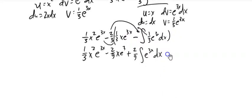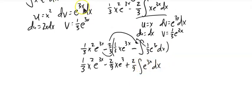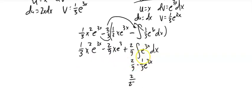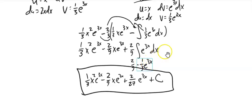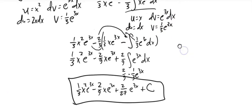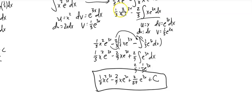One more piece: take that last integral, which we've done several times in this problem. The integral of e^(3x) is 1/3 e^(3x), still multiplied by that 2/9, giving 2/27 e^(3x). Then we collect all the other pieces and add the constant. What I want you to notice is that we had to work to peel away the x²: we took its derivative to get 2x, then had to do integration by parts again to peel that down further.